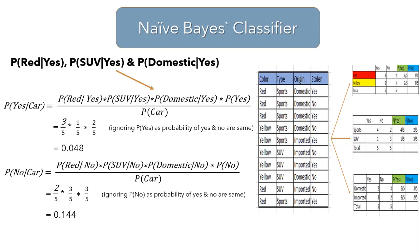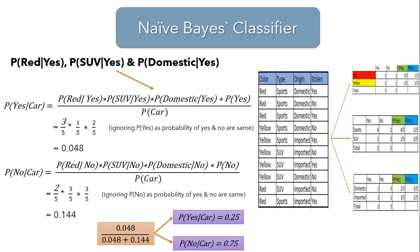The last step is to determine whether the car is stolen or not. We normalize P(yes|car) by taking 0.048 in the numerator and dividing by the sum of both probabilities: 0.048 divided by (0.048 + 0.144). After this calculation, the probability of yes given car is 0.25 and probability of no given car is 0.75. Since we select the larger value as our output, we conclude that the car has not been stolen, as it classifies as no.